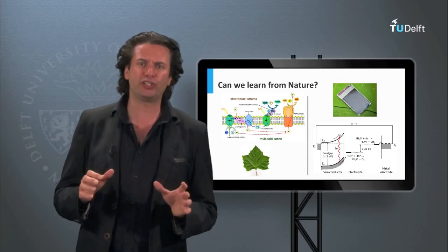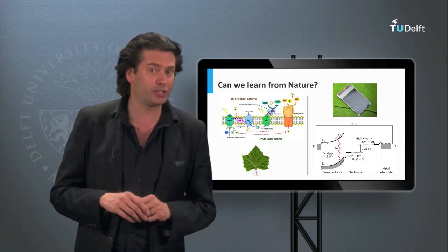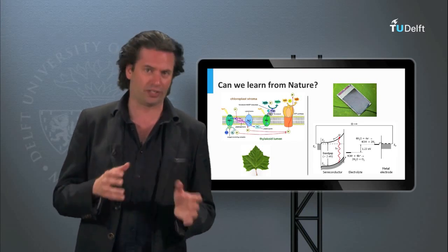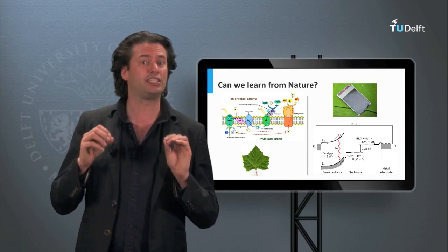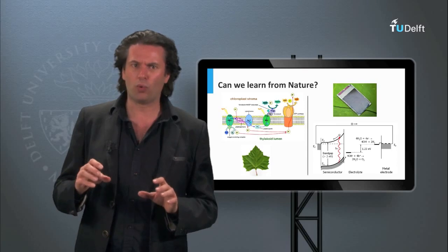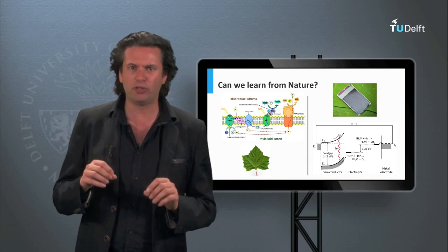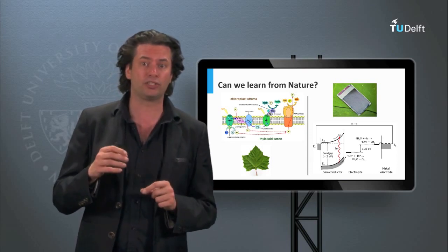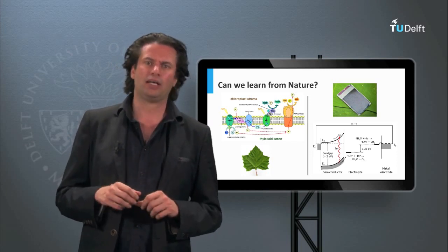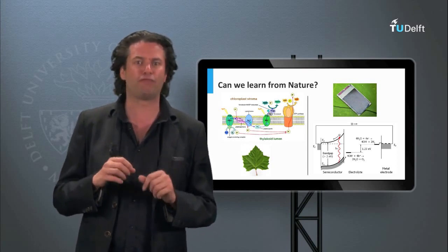Nature has been converting the energy from the sun into chemical energy for a long time by converting carbon dioxide and water into oxygen and sugars using sunlight. That is what we call photosynthesis. Now, we want to imitate this process with inorganic semiconductor materials. These materials are able to split a water molecule into oxygen and hydrogen using the energy of sunlight. That is why sometimes these technologies are referred to as artificial photosynthesis.